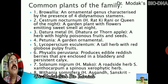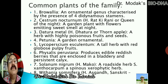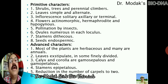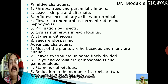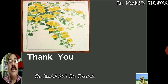Common plants of this family include Cestrum nocturnum — ratrani — which produces beautiful, sweet-smelling flowers; Petunia; Lycopersicum esculentum — tomato; Solanum nigrum; and Withania somnifera. The primitive characters of this family are: plants are shrubs; leaves are simple; inflorescence solitary axillary cymose; flowers actinomorphic; pollination by insects; many ovules present within the locules; stamens dithecous; and seeds endospermic. Advanced characters include: most plants herbaceous and many are annuals; leaves exstipulate; calyx and corolla gamosepalous/gamopetalous; stamens epipetalous; reduction in the number of carpels; and syncarpous gynoecium.